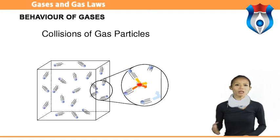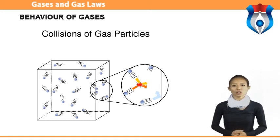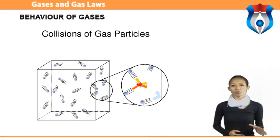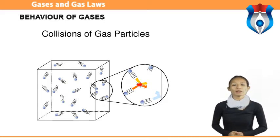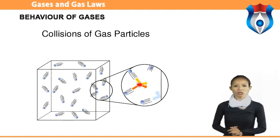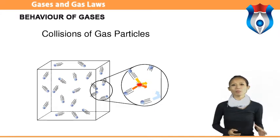Kinetic molecular theory is important to chemists and other scientists who need a molecular viewpoint in their work — biologists, material scientists, geologists, chemical engineers, medical scientists, environmental scientists, and others. They apply it constantly in their consideration of how gaseous substances behave because it provides the most fundamental picture of matter at the molecular level.